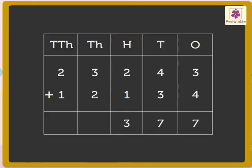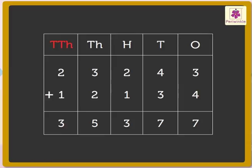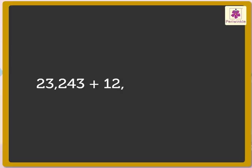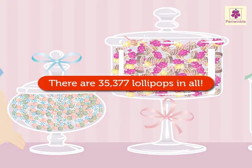Moving ahead, add the numbers in the thousands column: 3 and 2. We get 5, which we write in the thousands column. Finally, we add the numbers in the ten thousands column: 2 and 1. We get 3, which we write in the ten thousands column. Hence, we get the number 35,377. The sum of 23,243 and 12,134 is 35,377. Therefore, there are 35,377 lollipops in all.